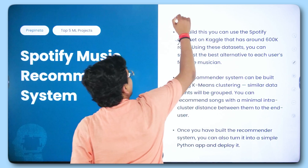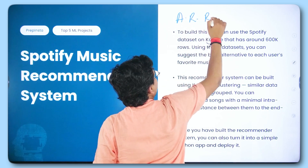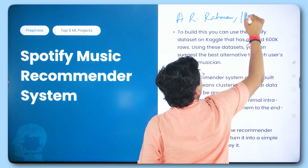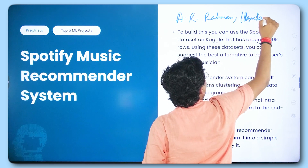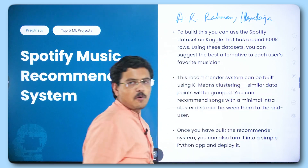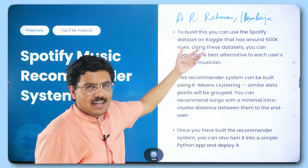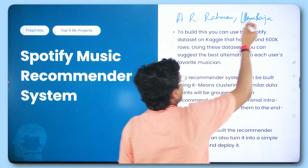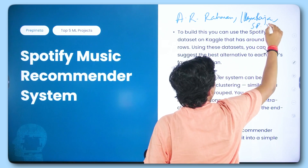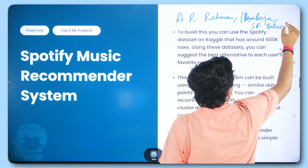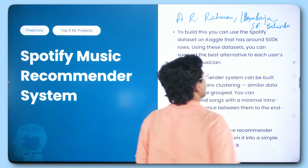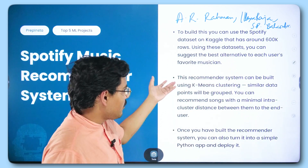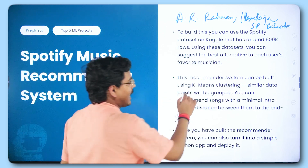For example, somebody is fond of AR Rahman — you can tell that person that Eli Raja can be a good alternative. Or somebody who's fond of listening to Eli Raja, one can suggest SP Balasubramaniam as a good alternative. This recommender system can be built using K-means clustering, and this is an unsupervised learning problem.